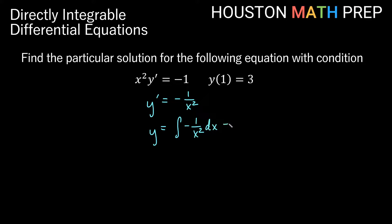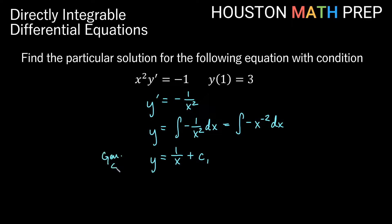We can treat this as negative x to the minus 2 for the power rule. Increasing the power by 1 gives x to the minus 1, and dividing by negative 1 removes the negative sign, giving us x to the minus 1 — also written as 1 over x. So the general solution is y equals 1 over x plus c1. Now we use the initial condition y(1) equals 3: when x equals 1, y equals 3.